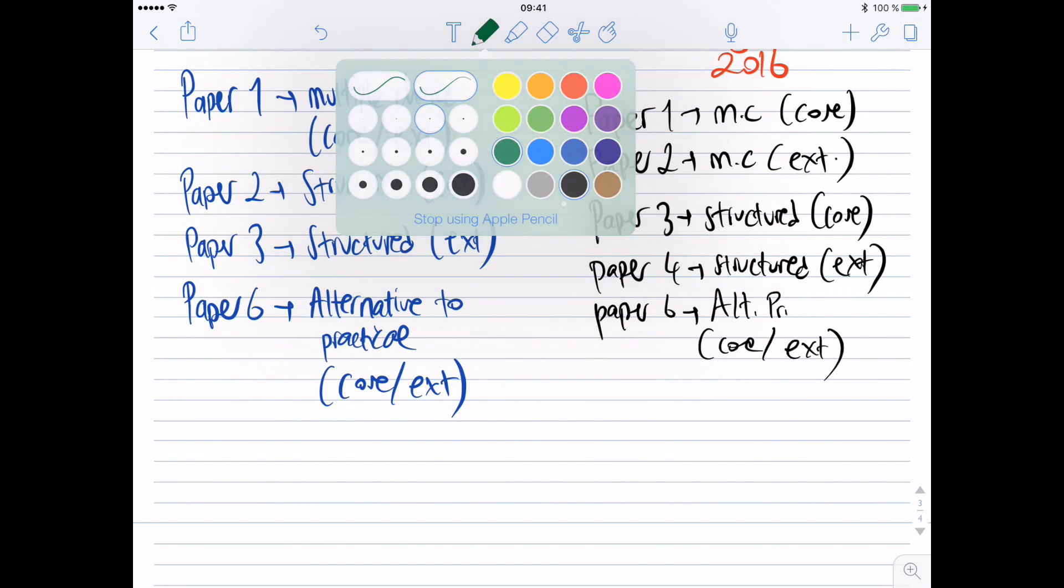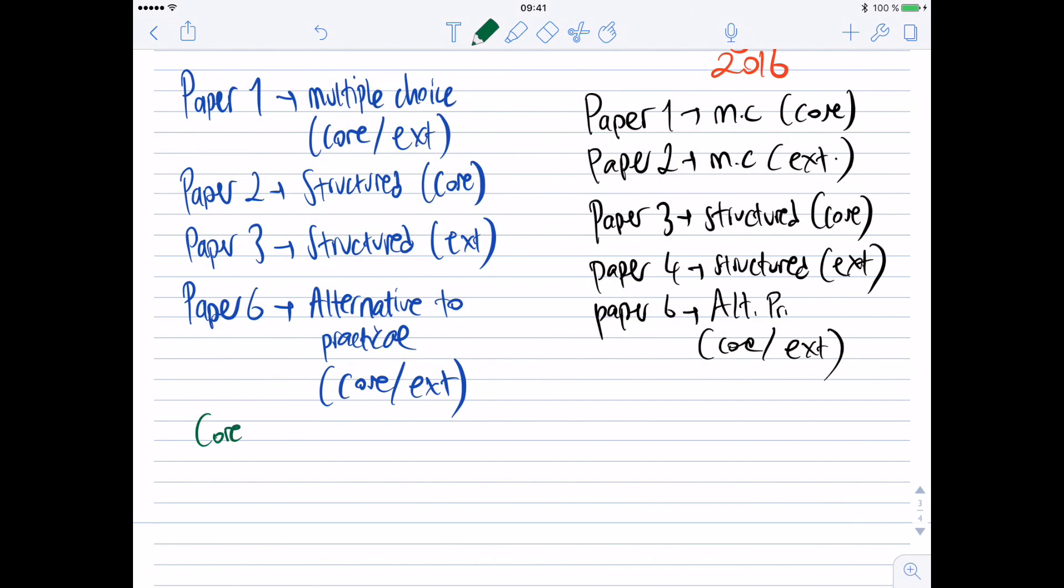The IGCSE candidates in the old system, the core candidates, used to take paper 1, paper 2, paper 6. And the extended candidates, used to take paper 1, paper 3, and paper 6. In the new system, the core candidates take paper 1, paper 3, and paper 6. And the extended candidates take paper 2, paper 4, and paper 6.